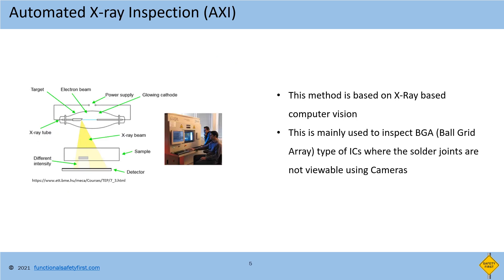The next method is AXI — automated x-ray inspection. This is similar to AOI; the only difference is it uses x-ray instead of a high definition camera. This method is mainly used to inspect the ball grid array, also called BGA type of ICs, where the solder joints are not viewable using a camera because the pins are under the ICs.